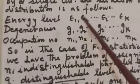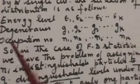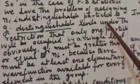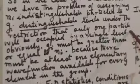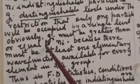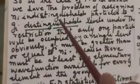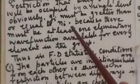The situation of distribution: energy level epsilon 1, epsilon 2 to epsilon I to epsilon K. Degeneracies G1, G2 to GI to GK. Occupation number N1, N2 to NI to NK. So in the case of Fermi Dirac statistics, we have the problem of assigning NI indistinguishable particles to GI distinguishable levels under the restriction that only one particle will be occupied.